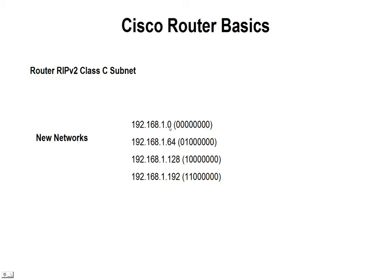The first one is our original with the zero — all those eight bits are placed at zero. Next, we're going to take that 64th bit, the second of the two that we're borrowing from that octet for network, set it high and we get the number 64 — that becomes our second network. Our third network, we're going to take the 128, set it high and turn the 64 off — that gives us a third network of 128. And then the last combination is setting them both high and we get 192. So just by taking two bits, we've set up four networks: zero, 64, 128, and 192. Version 2 of RIP allows us to now add those two outer networks back in, so we've got four networks to work with.